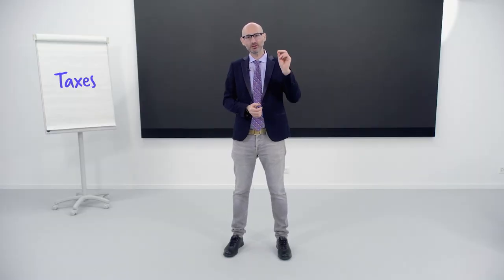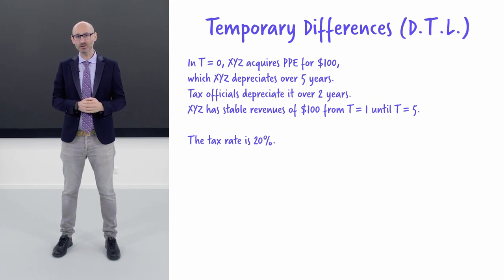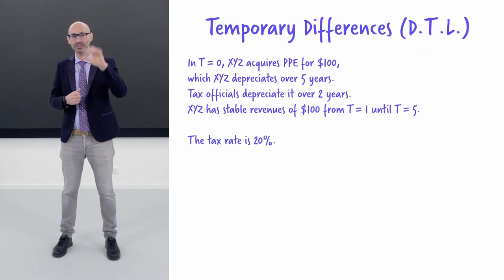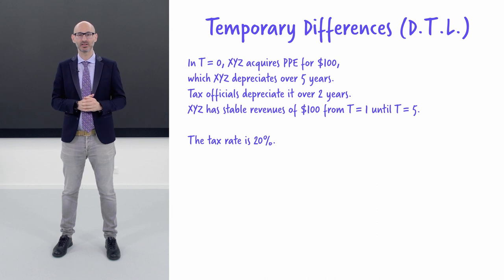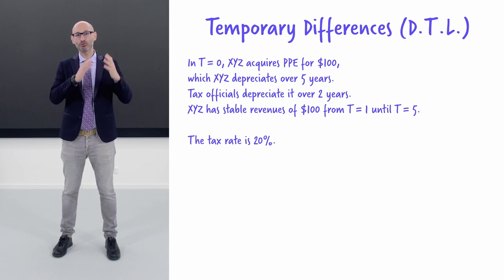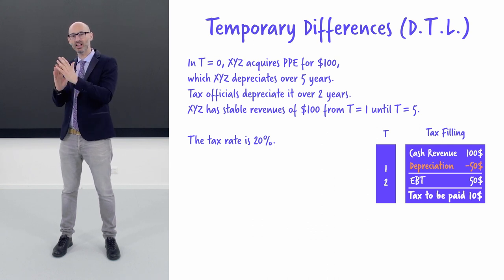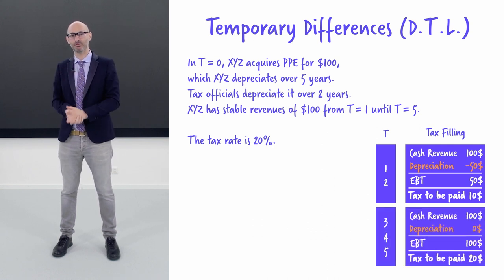Let us do another example. Think of an asset that is to be used over a five-year period. In accounting, we depreciate it over five years. Now, assume the government lets us depreciate it over a two-year period. We will have a tax bill of $10 the first two years and then a tax bill of $20 in years 3 to 5.